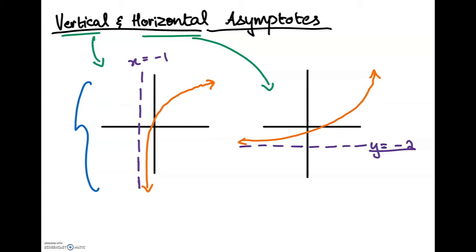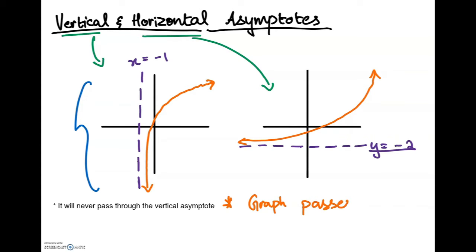There is one important point to remember: a graph can pass through the horizontal asymptote at least once. It doesn't have to, but it can.